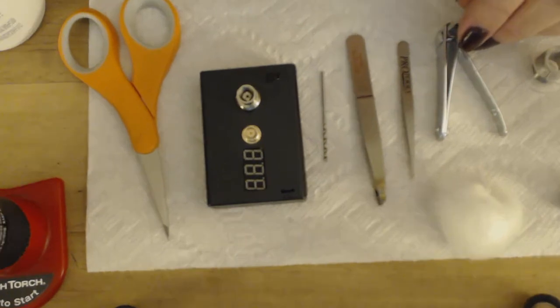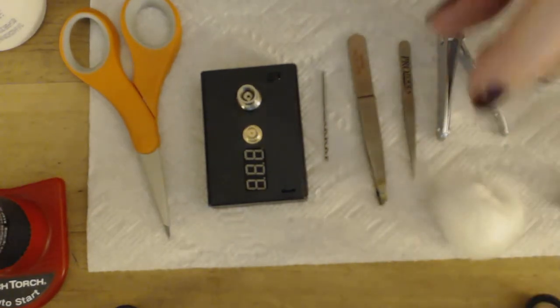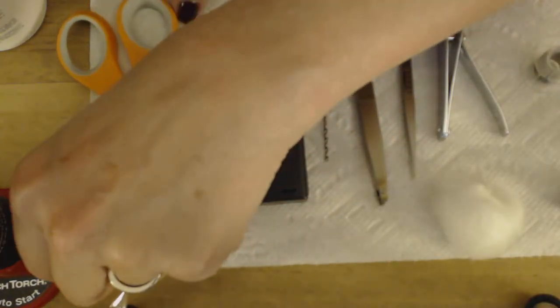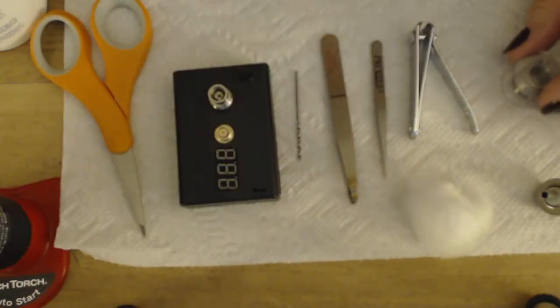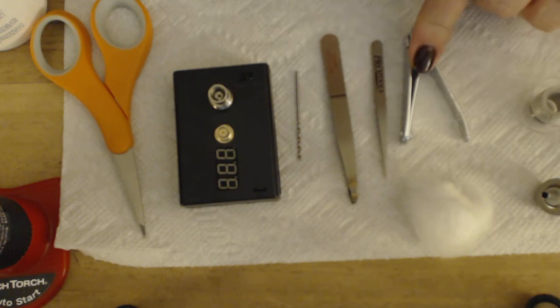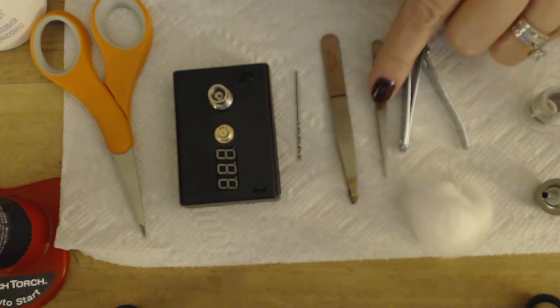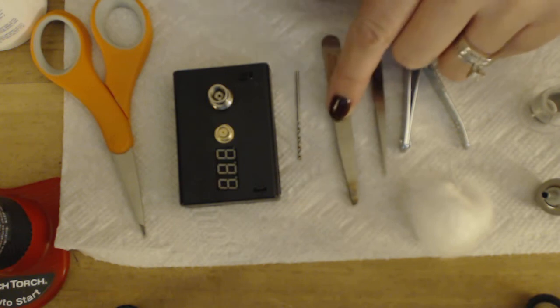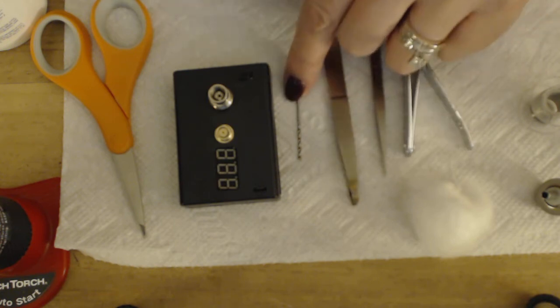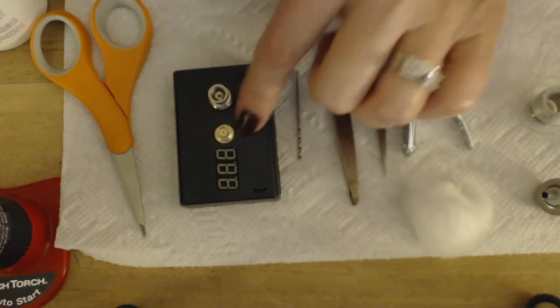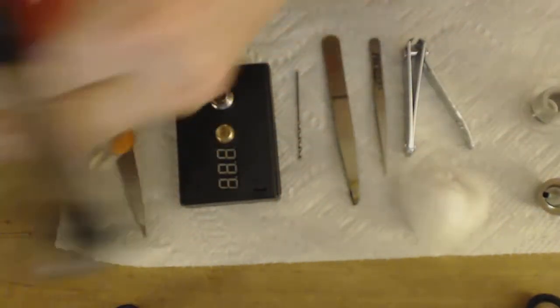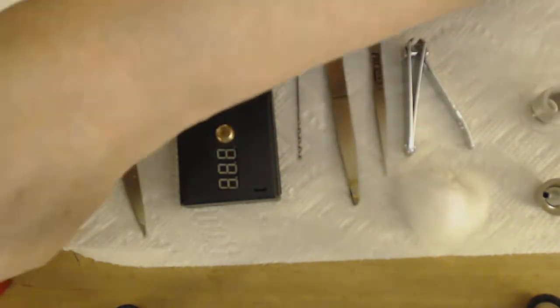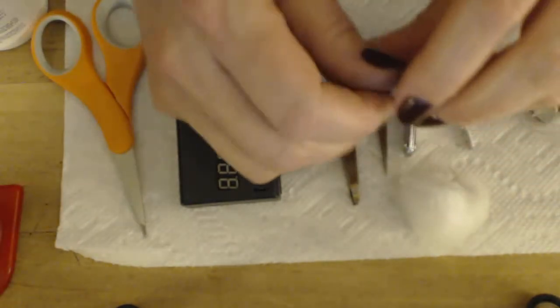I have 30 gauge Kanthal wire, fingernail clippers, needlepoint tweezers, standard tweezers, a 1/16 drill bit, something to check my ohms, scissors, cotton ball, and a torch. I'm going to start with taking apart this atty and unscrew it from its base.